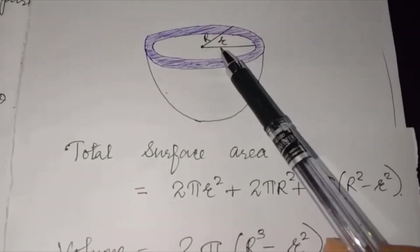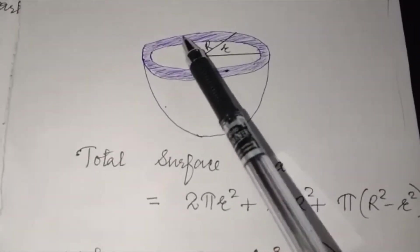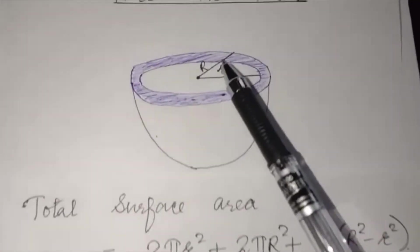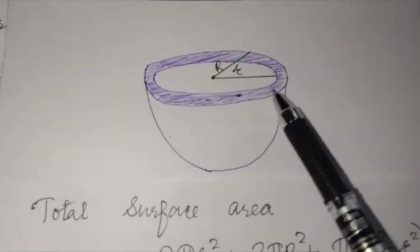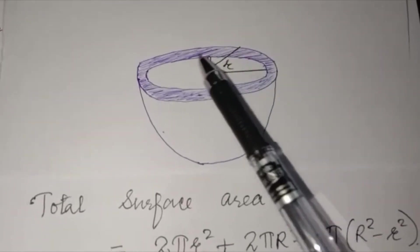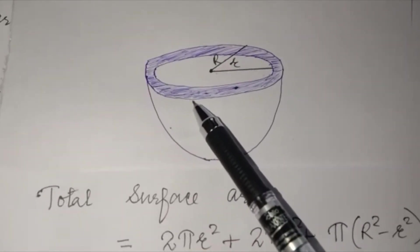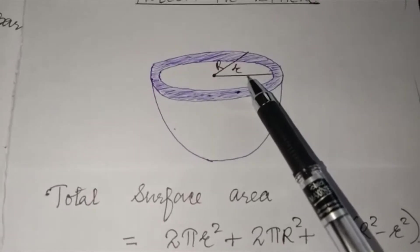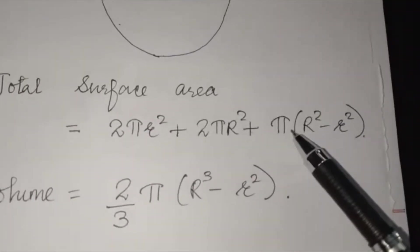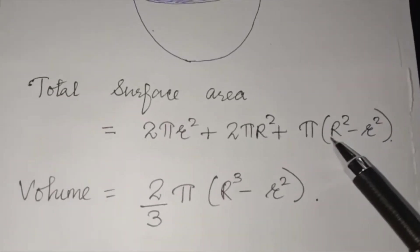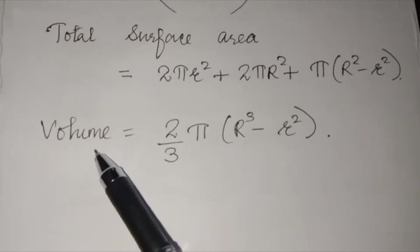Total surface area = internal surface area + external surface area + area of the ring. To find the area of the ring, subtract the smaller circle from the larger circle: πR² − πr² = π(R² − r²). So the total surface area formula for a hollow hemisphere is 2πr² + 2πR² + π(R² − r²).